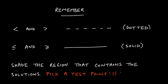A couple of things to remember when graphing: with a strict less-than or greater-than sign, we always draw a dotted line. With less-than-or-equal-to or greater-than-or-equal-to, we draw a solid line. Finally, we shade the region that contains the solutions. The easiest way to determine which region to shade is to pick a test point — this is highlighted because students often skip it, but it's the simplest way to know which side to shade.